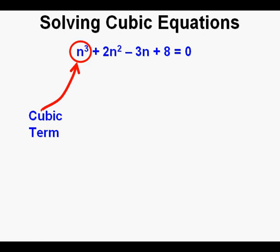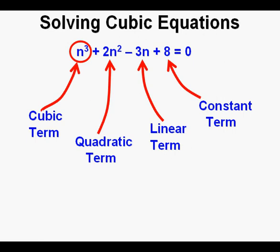A cubic equation has a cubed term or a variable raised to the third power. Cubic equations or third degree polynomials may also have a quadratic term, a linear term, or a constant term, or any combination of these terms, but the cubic term is the only term necessary to have it be a cubic equation.